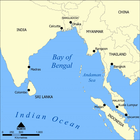A tropical storm with rotating winds blowing at speeds of 74 miles per hour is called a cyclone when it originates over the Bay of Bengal, and a hurricane in the Atlantic. Between 100,000 and 500,000 residents of Bangladesh were killed because of the 1970 Bola cyclone.